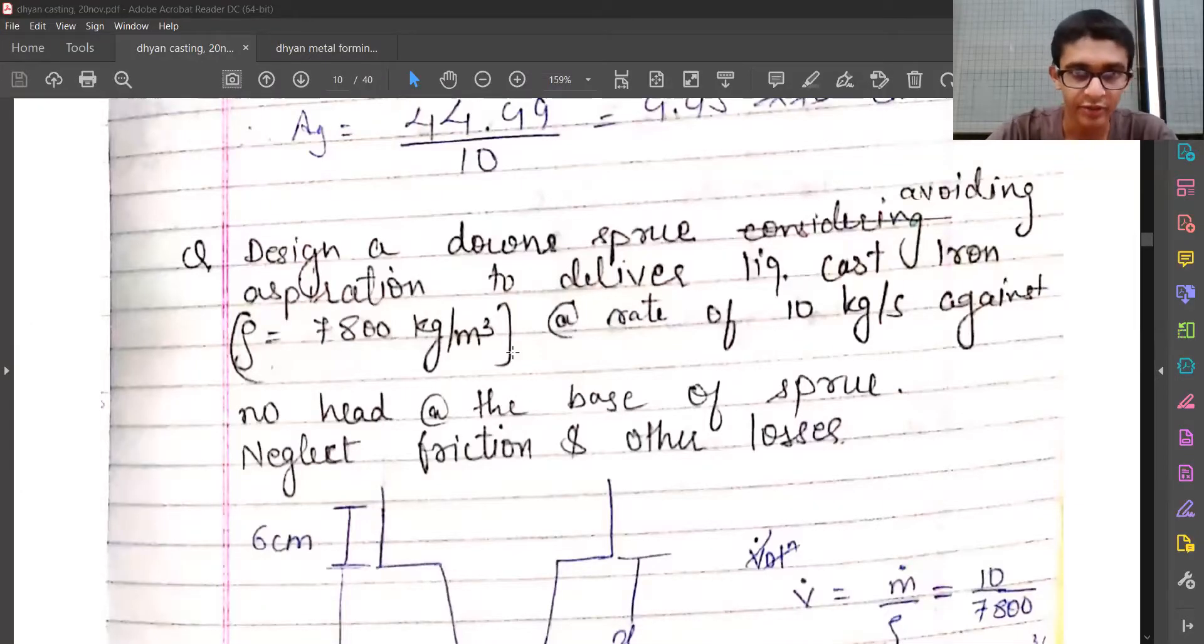Let's solve one question which is related to aspiration effect, which I have explained earlier. We are given with a question: design a down sprue avoiding aspiration to deliver liquid cast iron at the rate of 10 kg/s against no head. No extra head is available at the base of the sprue.